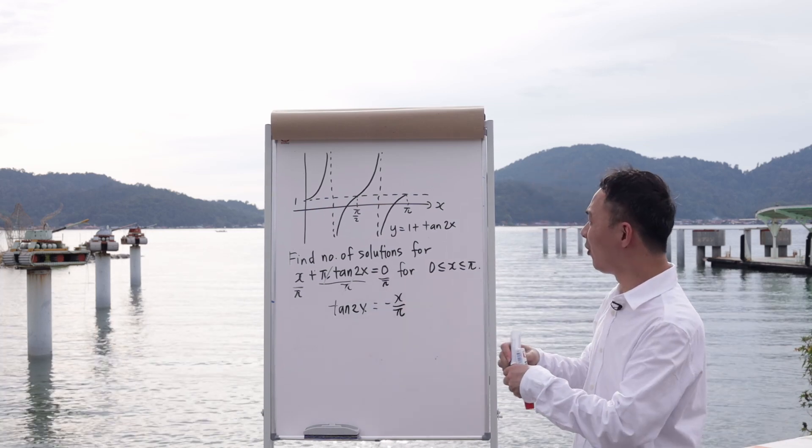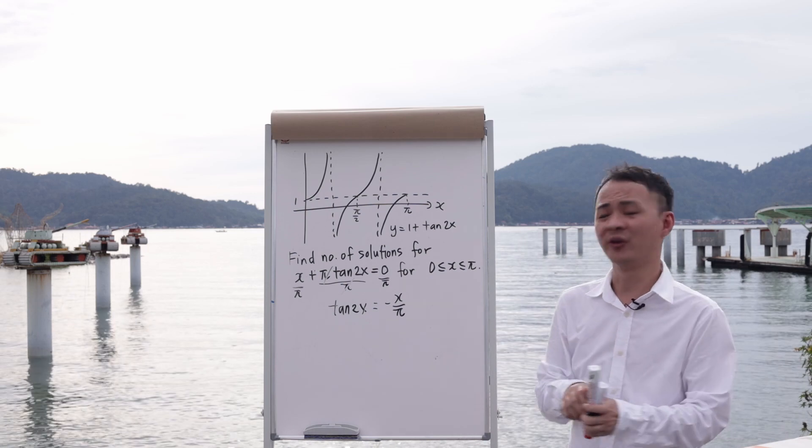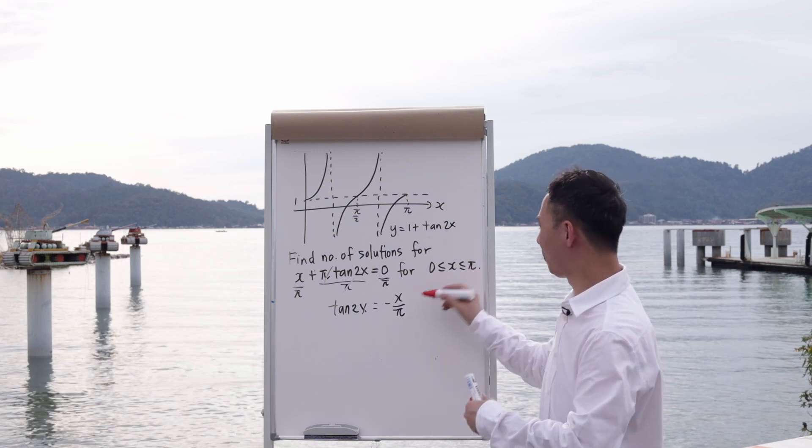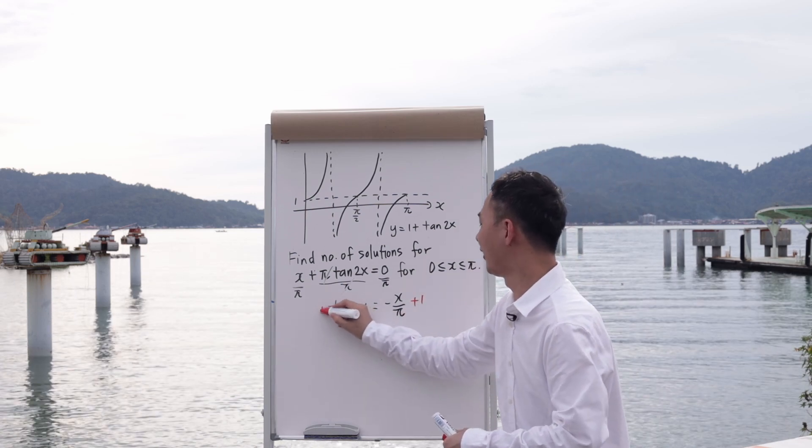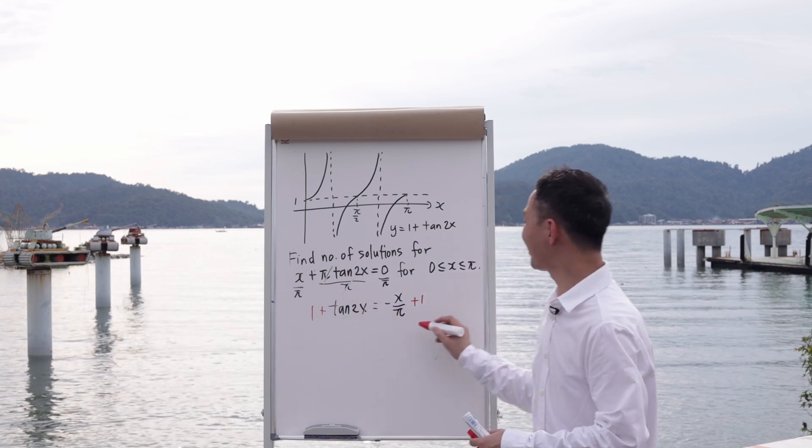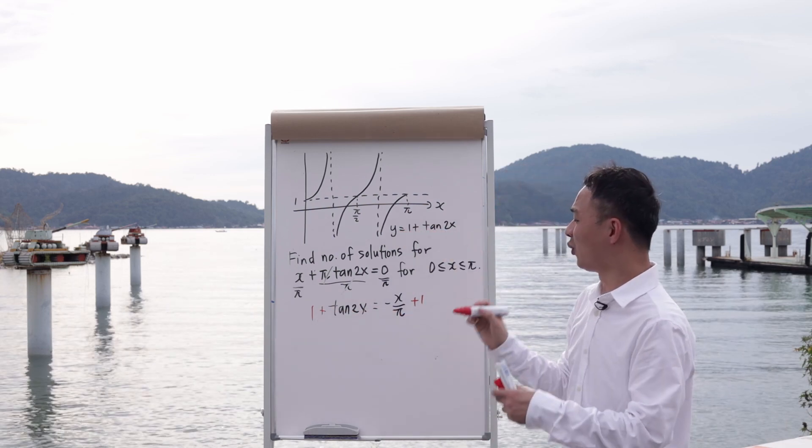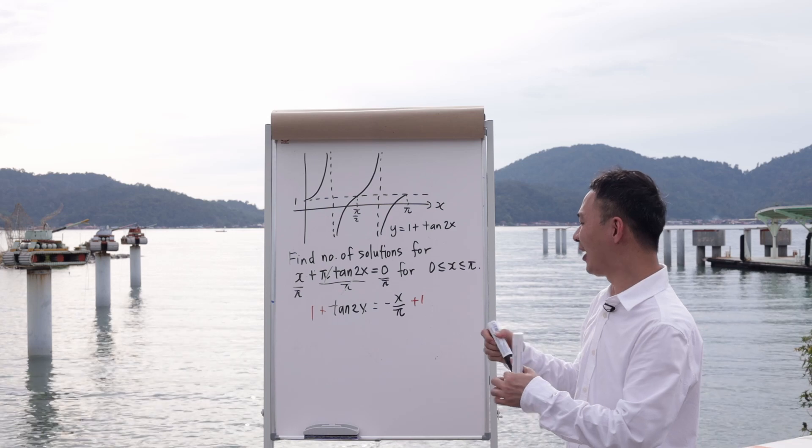And then I will need one more thing, which is plus 1 in order to substitute in the y. So I will plus 1 for left and right. So if I have 1 plus tangent 2x, that's exactly the y, isn't it? So then now I can substitute in the y.